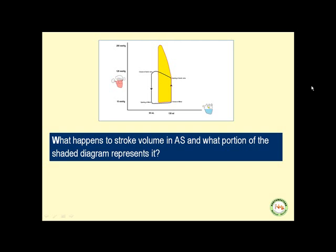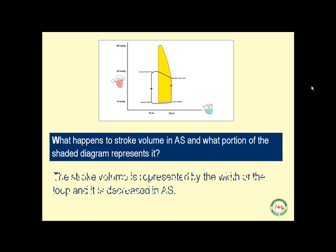What happens to stroke volume in aortic stenosis? Stroke volume is the difference between end-diastolic volume and end-systolic volume. In a normal heart in this diagram, it is 130 minus 50, about 80. But the width of the loop is decreased in aortic stenosis; therefore, stroke volume decreases in aortic stenosis.